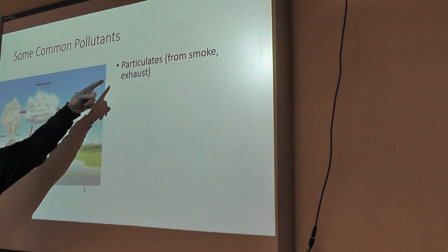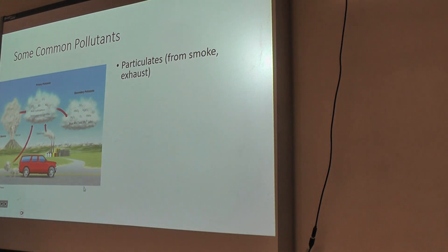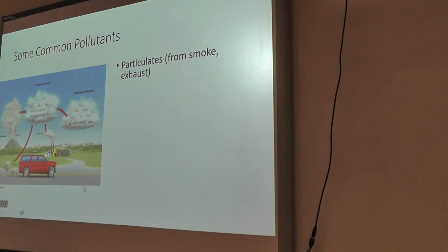One category of pollutants is particulates — things that are actual tiny chunks of stuff. Smoke and exhaust can be like that. We think of exhaust as a gas because we smell the fumes, but there's actually a lot of particulate matter in exhaust. That's why you get darkening of surfaces in areas with lots of cars — the exhaust deposits little tiny pieces of partially combusted or uncombusted oil, which is dark and black, and gets deposited on surfaces.